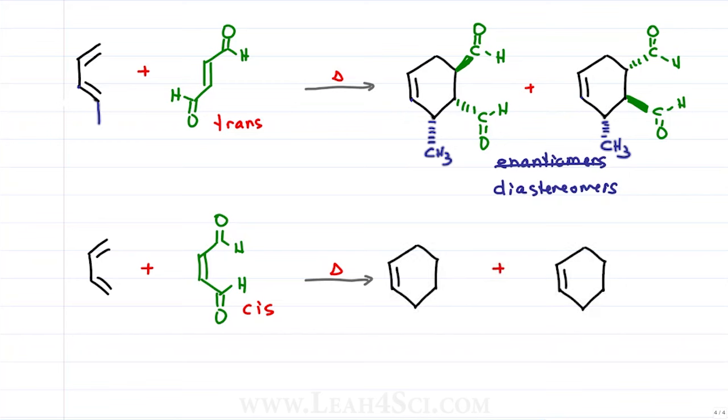Same thing for the cis configuration, the product will still be cis. And so I have the option of bringing both of the groups up and out of the page or both of the groups down and into or into the page. Since both substituents go in the same direction, when they come up and out of the page or exit the page, we get the exo. And when they go down and into or into the page, we get endo.